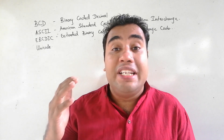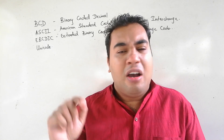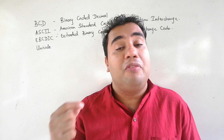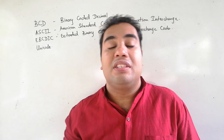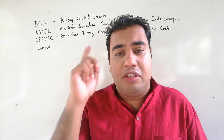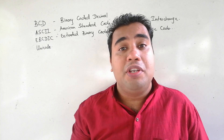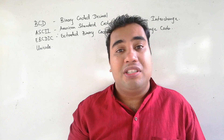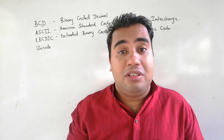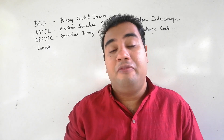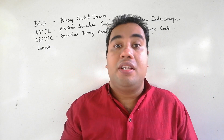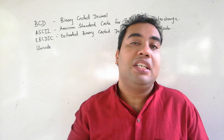We know that in decimal the largest digit is 9. How many bits do we need to represent the value 9? In binary, we represent 9 as 1001. That is exactly what we did in hexadecimal-to-binary conversion. Since 9 is the largest digit and this is a standard, we are going to use exactly four bits to represent each digit of the decimal value. That is how this coding system works.